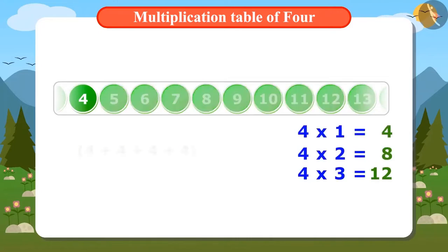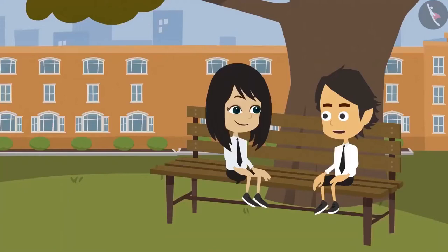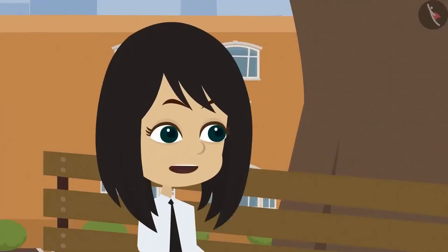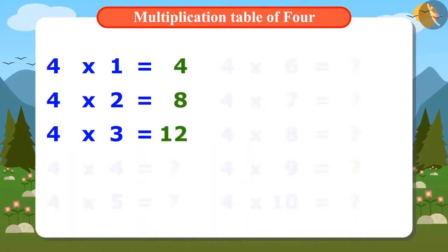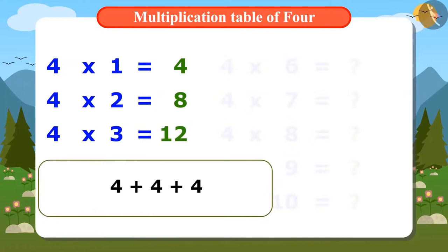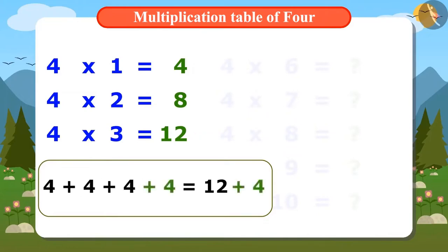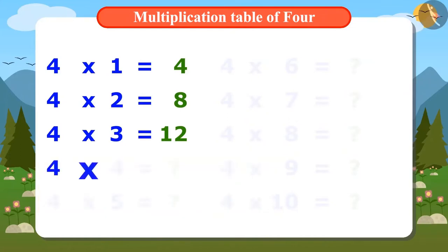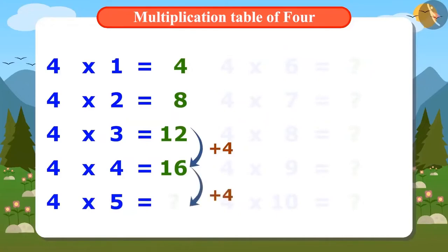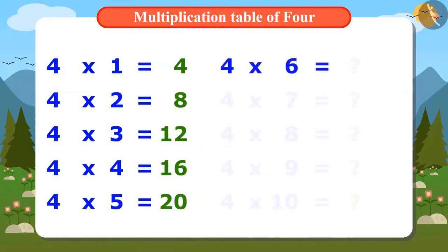Now to find out the next number, we will add 4 four times. Wait Neha. I don't think we need to add 4 four times. Then how do we find 4×4? Look. To find out 4×3, we have added 4 three times, whose answer is 12. Now by adding 4 to 12, we can find out how much we get if we add 4 four times. Instead of adding 4 four times, we will add 4 to 12. That means we can find the next number in the multiplication table of 4 by adding 4 to 16, which will be 20. In the same way, we can find the next number by adding 4 to 20, that is 24.